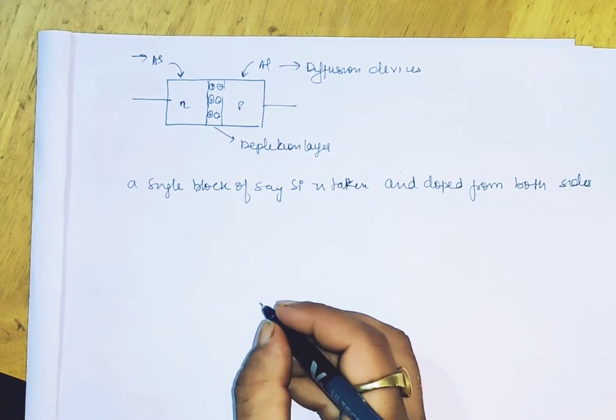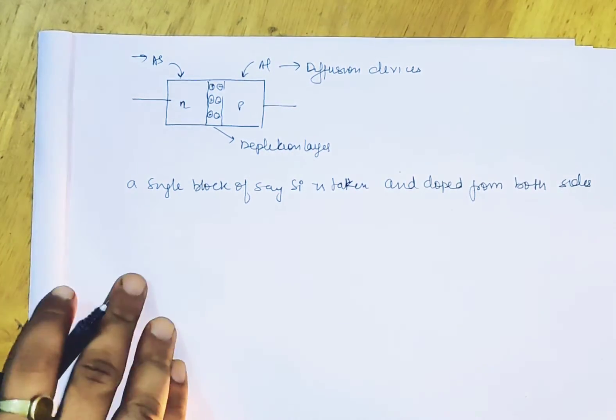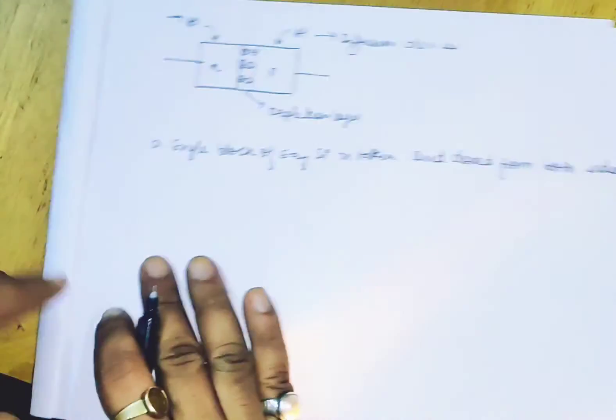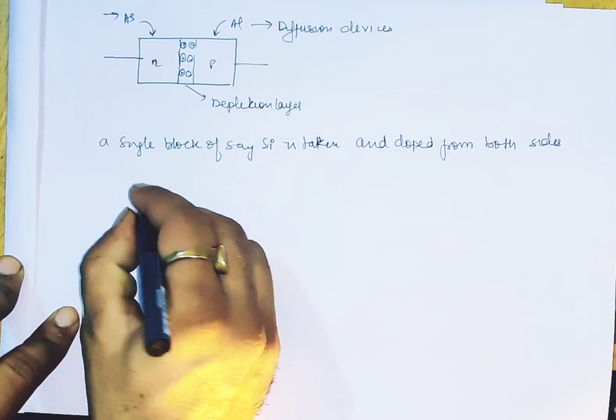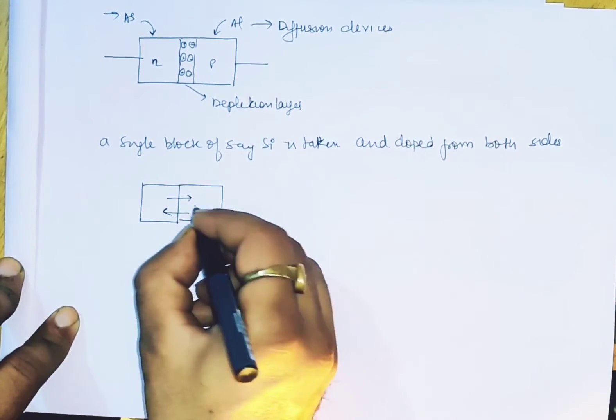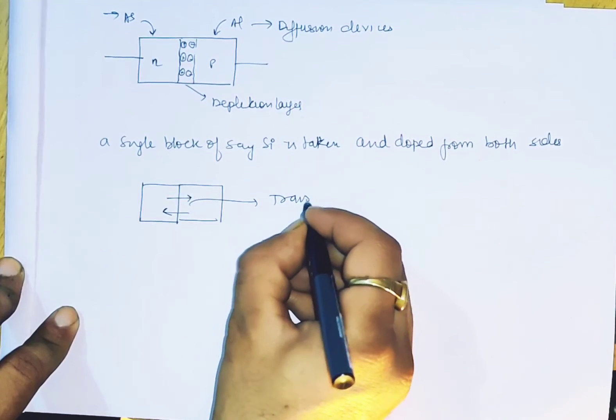This is a single block of silicon, so we don't have to connect. If you have to connect P and N, transfer cannot take place.